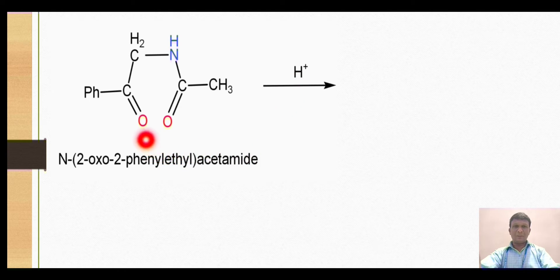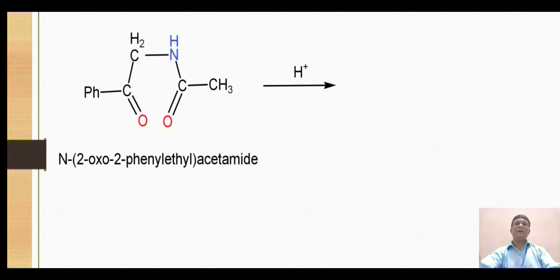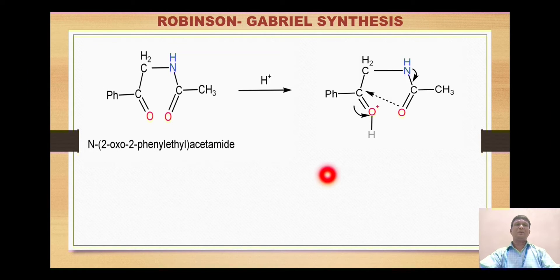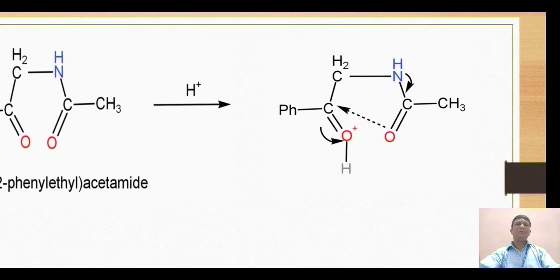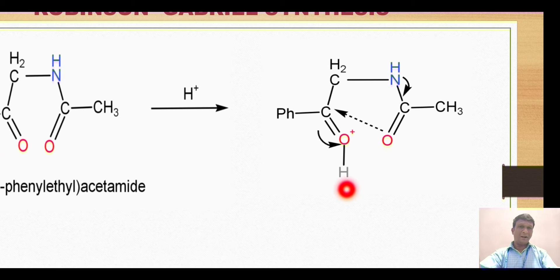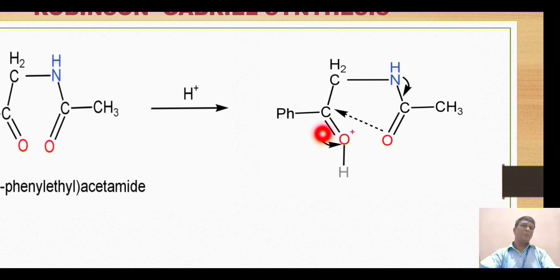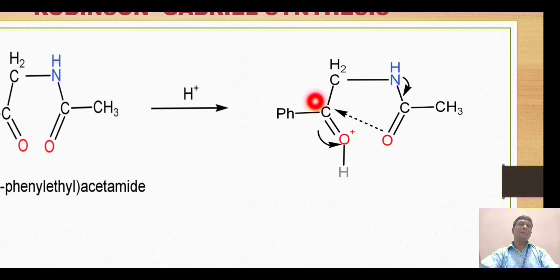This starting material is reacted with acid, which provides a proton. The proton goes onto the carbonyl oxygen, so the oxygen acquires a positive charge because it shares its lone pair with the hydrogen, forming an intermediate. The hydrogen is now attached to this oxygen; since oxygen is electronegative, it attracts the pi bond electron pair towards itself, breaking the pi bond. This carbon then becomes electron-deficient, forming a carbocation.